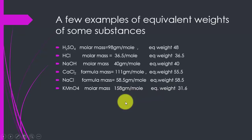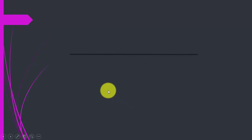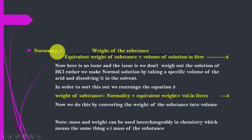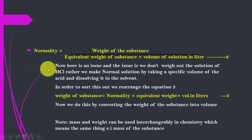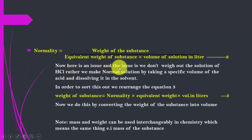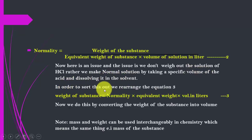Normality is equal to weight of substance divided by equivalent weight into volume of solution in liters. Since we are discussing HCl, which is a solution, there is an issue: we don't weigh out the HCl solution. Instead, we make the normal solution by taking a specific volume of the acid and dissolving it in solvent. To sort this out, we rearrange equation number three.